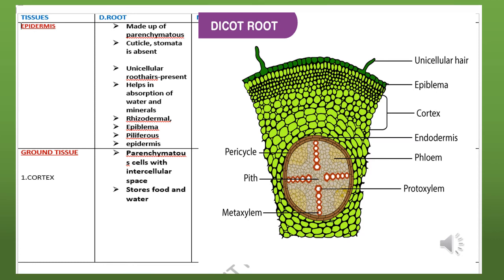In this video we are going to learn about the dicot root. In dicot root there are three types of tissue: epidermis, ground tissue, and vascular tissue.